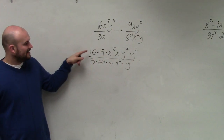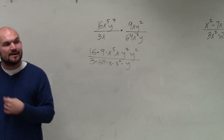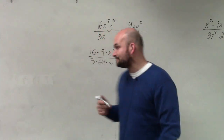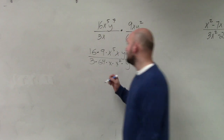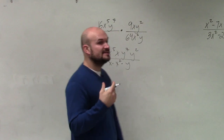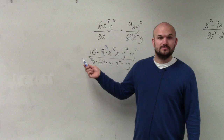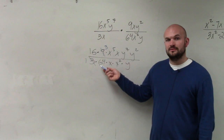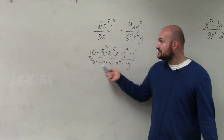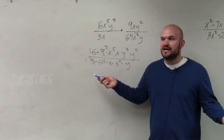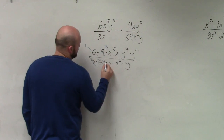Now obviously you can multiply 16 times 9 and 3 times 64 and then reduce the fraction. However, I do not like to reduce after that — we want to see if we can simplify on the front end. What I notice is that 9 divided by 3 can reduce down to 3 over 1. Then I want to see if 16 and 64 can reduce. I know that 8 divides into both of those. 8 goes into 16 twice, and 8 times 8 is 64, so 8 goes into 64 eight times. That reduces to 2 over 8, which can be reduced down to 1 fourth. So 16 goes into 64 four times — 1 fourth.